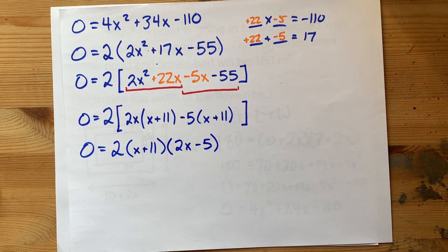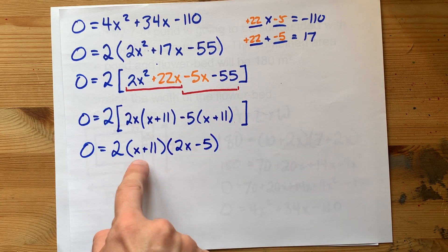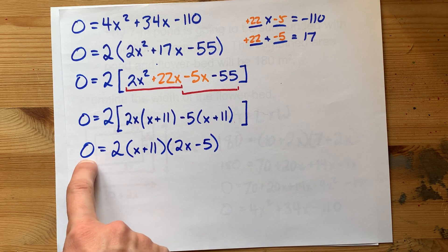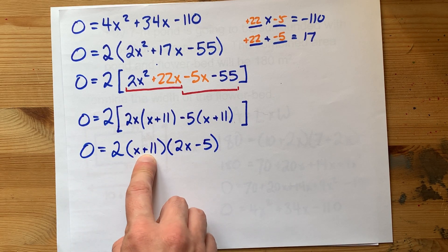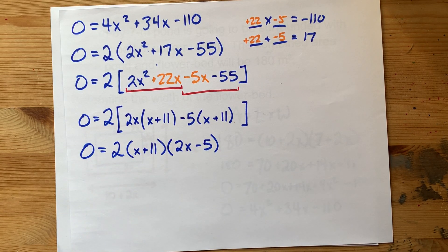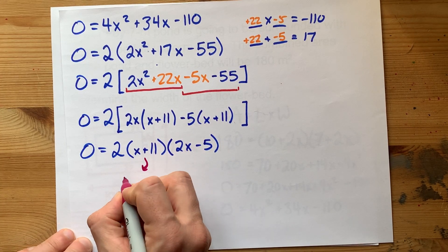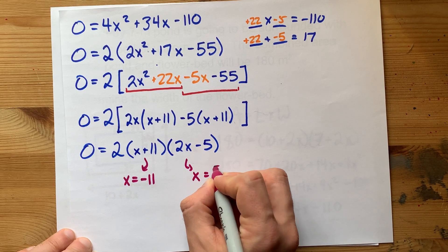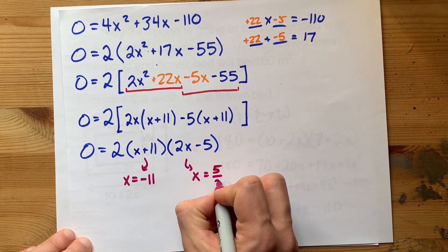And because of the property of 0, they call it, if something times something times 2 is 0, then either this is 0 or this is 0. Which means either x is negative 11 or x is positive 5 over 2.